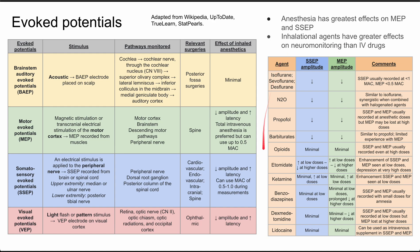Here's a survey of the different anesthetics and their specific effects. For inhalational agents — isoflurane and desflurane — you'll have decreased sensory amplitude and decreased motor amplitude. Sensory amplitude is generally acceptable up to 1 MAC, and motor up to 0.5 MAC without significant issues. Nitrous oxide has similar effects to isoflurane and is actually synergistic when combined with halogenated agents, so using them together produces an even greater decrease in sensory or motor amplitudes. Propofol similarly allows sensory and motor potentials to be recorded at anesthetic doses, but motor evoked potentials may be lost at high doses.